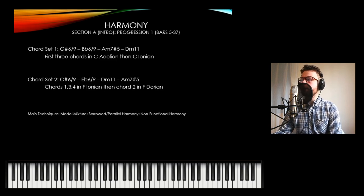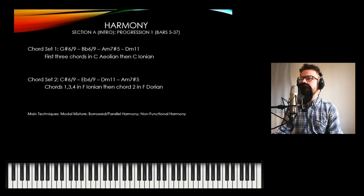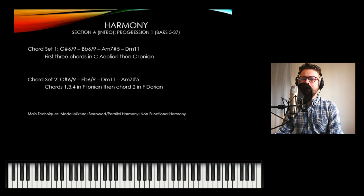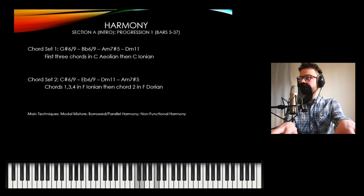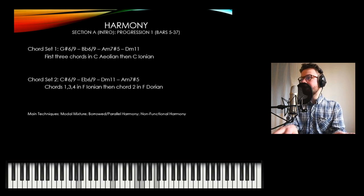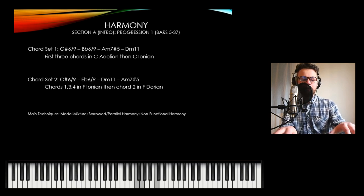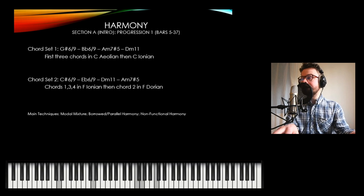Jump right into the harmony. So the first progression you hear — progression one — which features in the introduction, section A, has two chord sets within its progression. I'm going to illustrate that on the keyboard here. The first chord: G sharp 6/9. Second chord: B flat 6/9. Third chord: A minor 7 sharp 5, followed by a D minor 11.